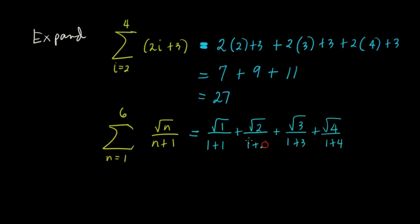Anyway, nothing's wrong - it will come out the same. But let's follow the rule since n comes first. We have 2 plus 1, 3 plus 1, and 4 plus 1, plus square root of 5 over 5 plus 1, plus square root of 6 over 6 plus 1. So we've reached the upper bound, so we'll stop there.